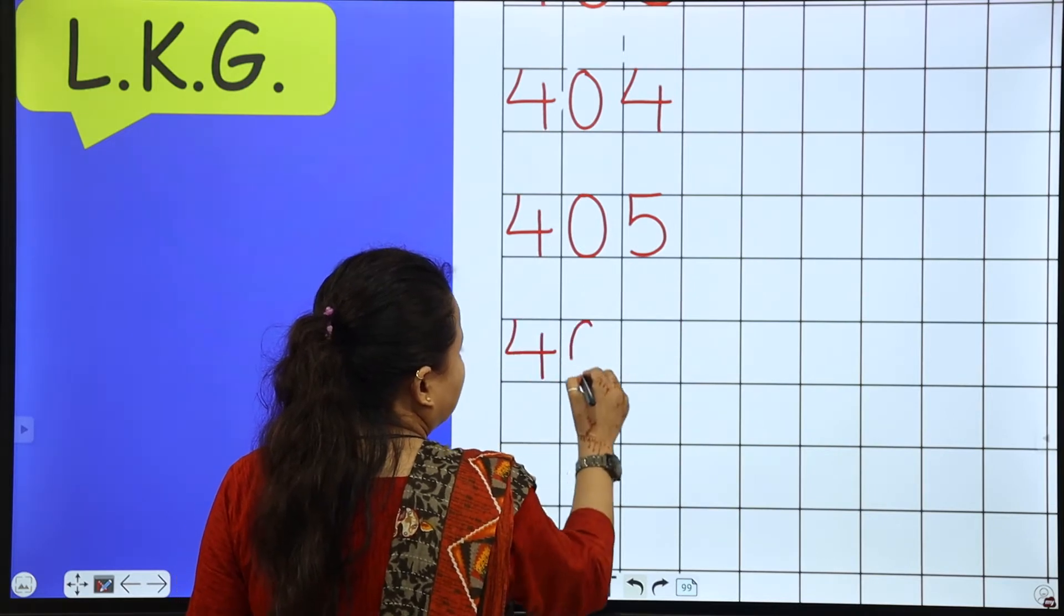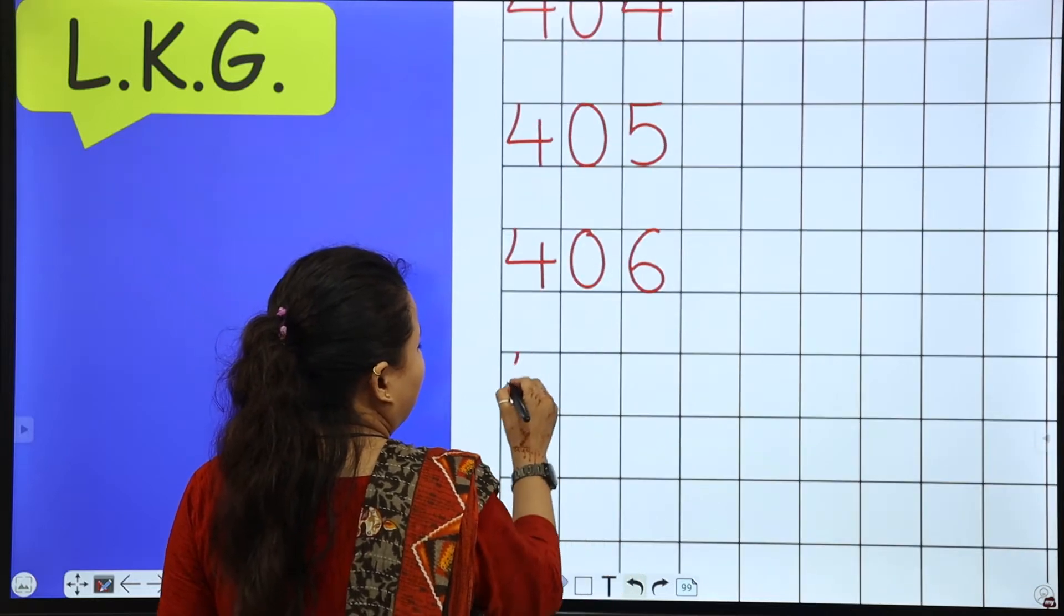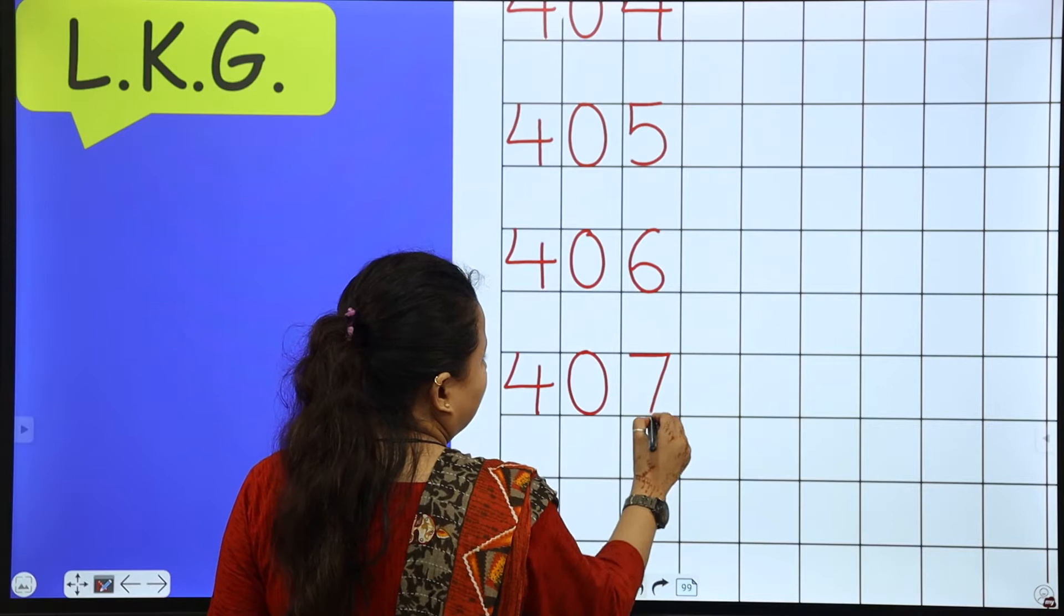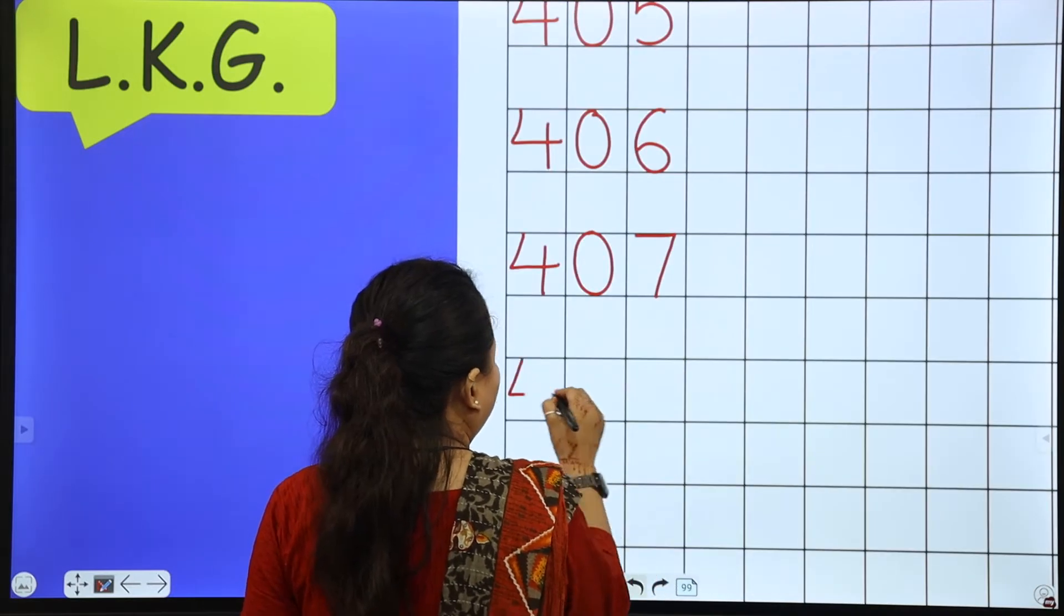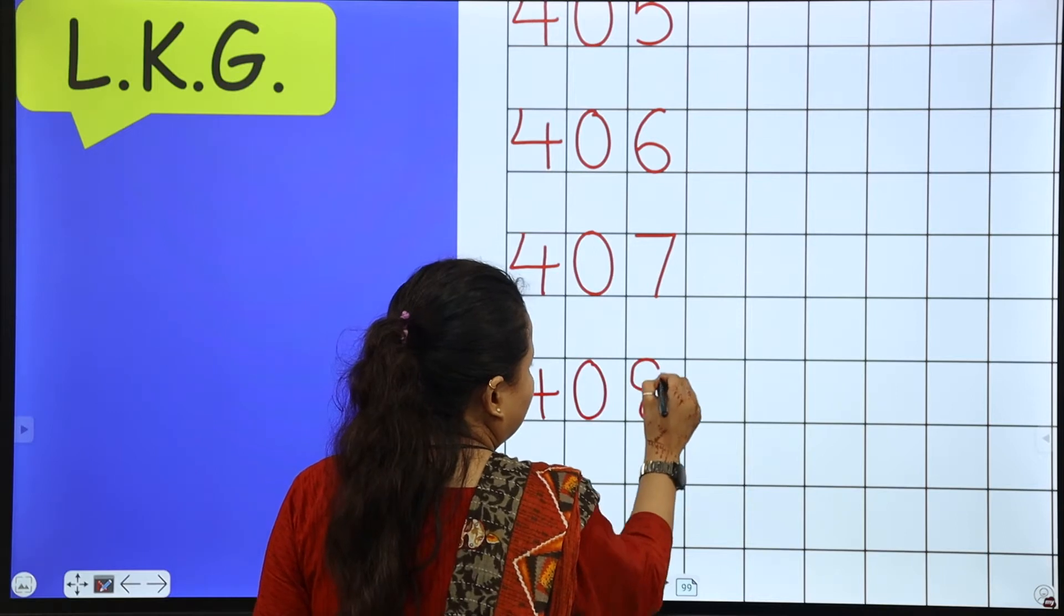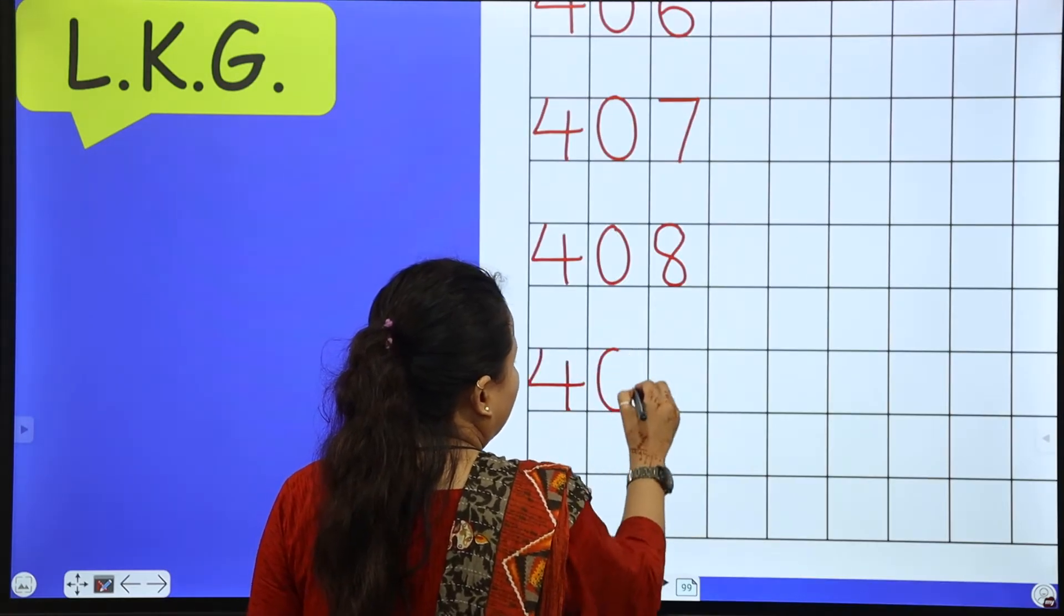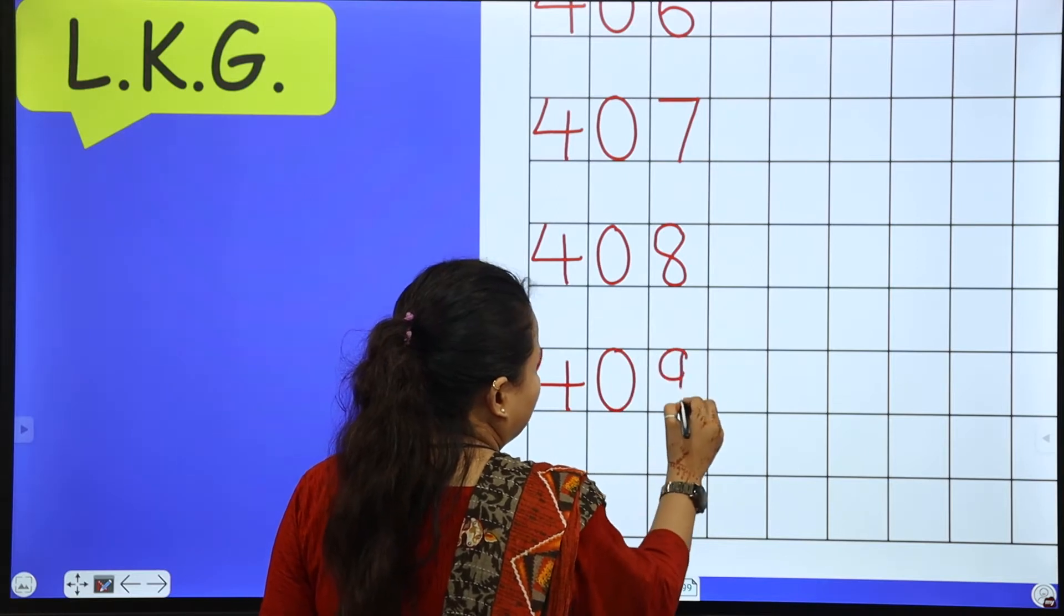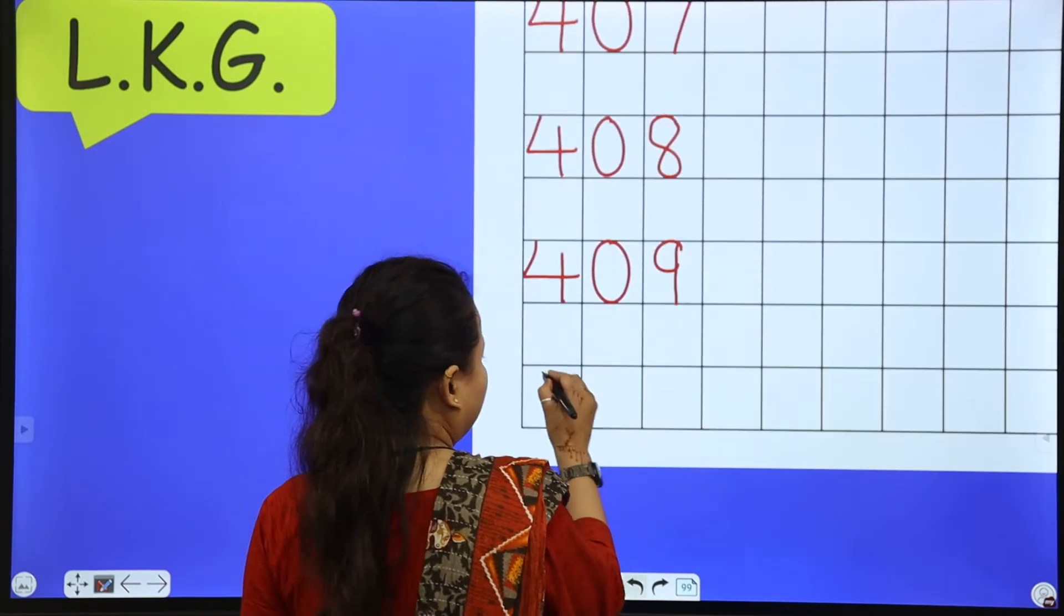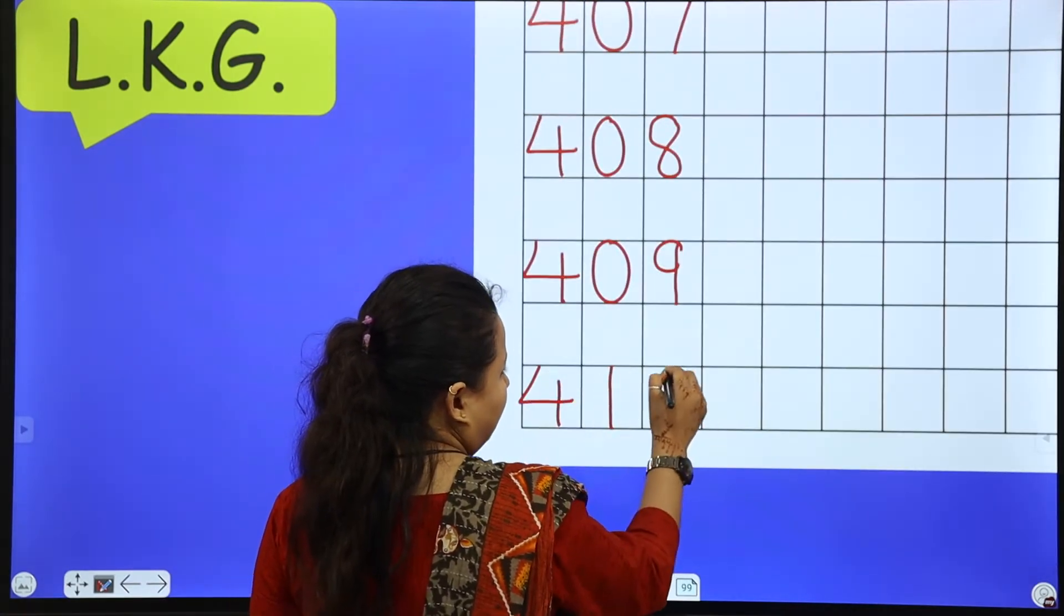406. Touch the line. Okay. 407, 408, 409. And the next and last number of this line is 400. After 9, 10.